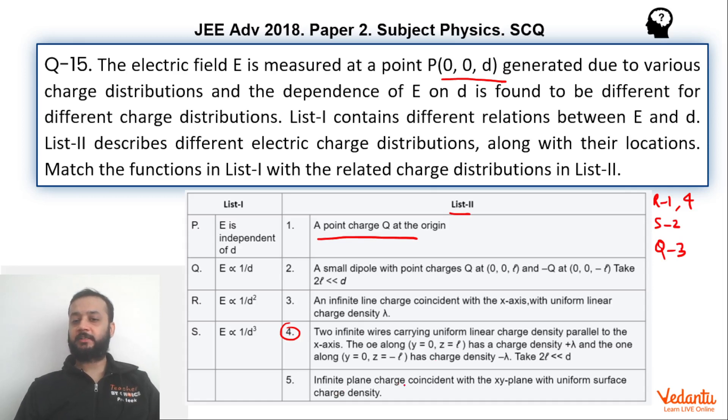Fifth is fairly simple. Infinite charge coincident with x-y plane. You can assume that x-y plane is infinitely charged with uniform surface charge density. Here electric field will be independent of distance because we know that for infinite charge sheet, electric field is sigma upon 2 epsilon naught and hence it does not depend upon the location of the point. We can assume it to be constant, so it will be independent of d. So P will match with 5.